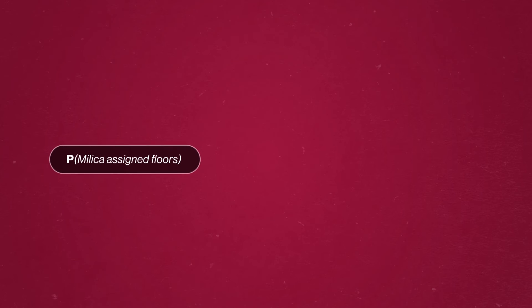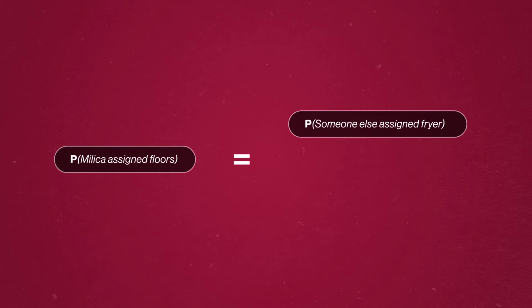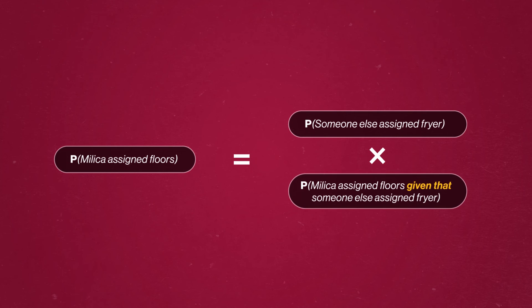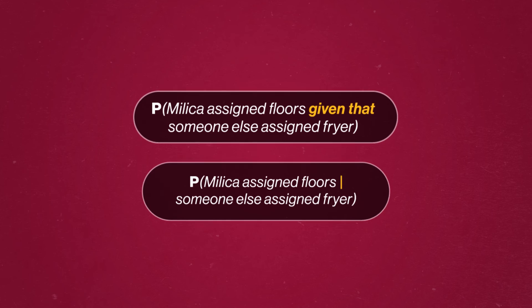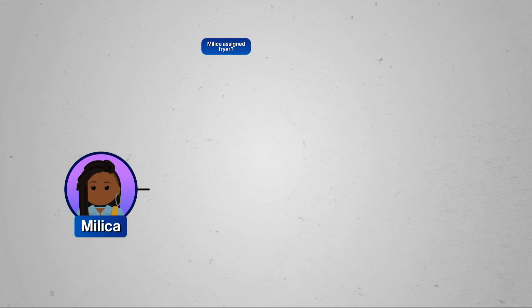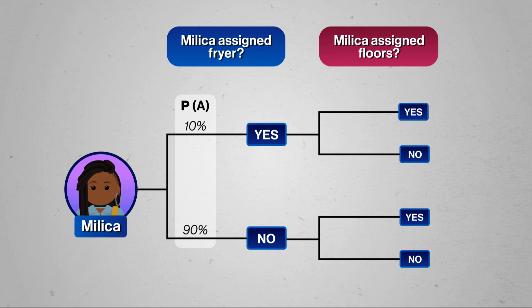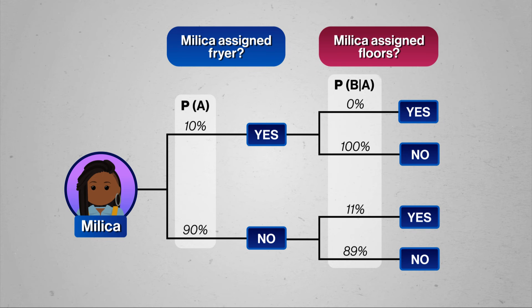So when we're calculating the probability of dependent events, we need to account for the extra information we need. The probability that Melissa will be sweeping floors on Friday is the probability that someone else, like Hendrik, is picked for the fryer, multiplied by the probability that Melissa is picked for sweeping given that someone else was assigned the first job. The term 'given that' comes up all the time in probability, and we represent it with a straight line. We can think about this like a tree diagram for multiple events — the first branch is whether Melissa gets assigned the fryer, and the second is whether she's assigned the floors. Notice that the probabilities on that second branch depend on the first two branches.